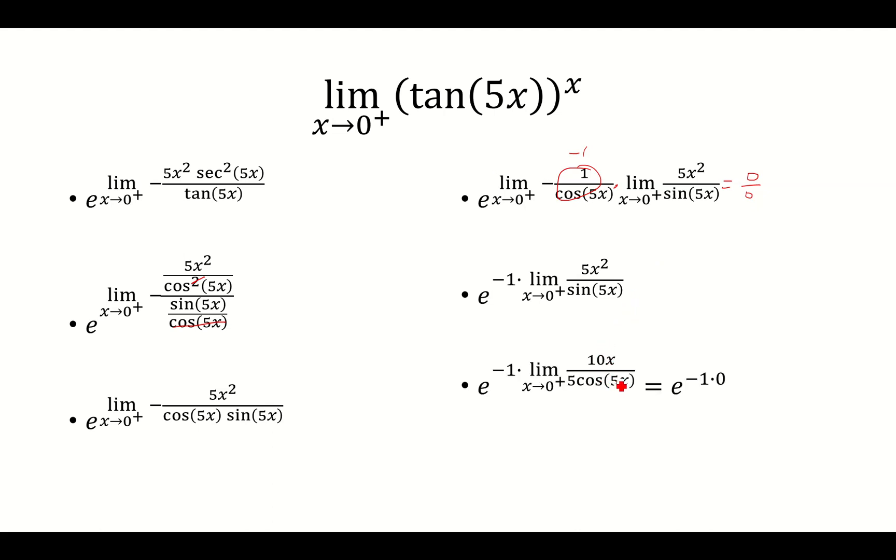You get 10x over 5 cosine 5x. The bottom becomes 5, the top becomes 0, so this whole thing is just 0. Negative 1 times 0 is 0, and e to the 0 is 1. And that is our limit.